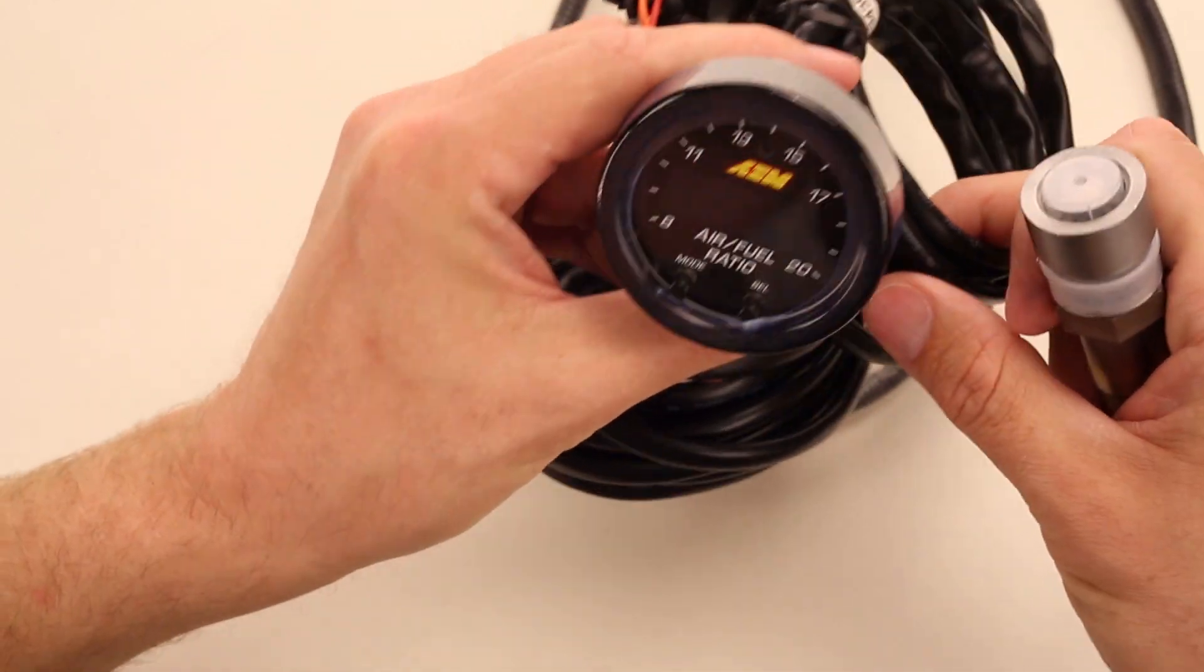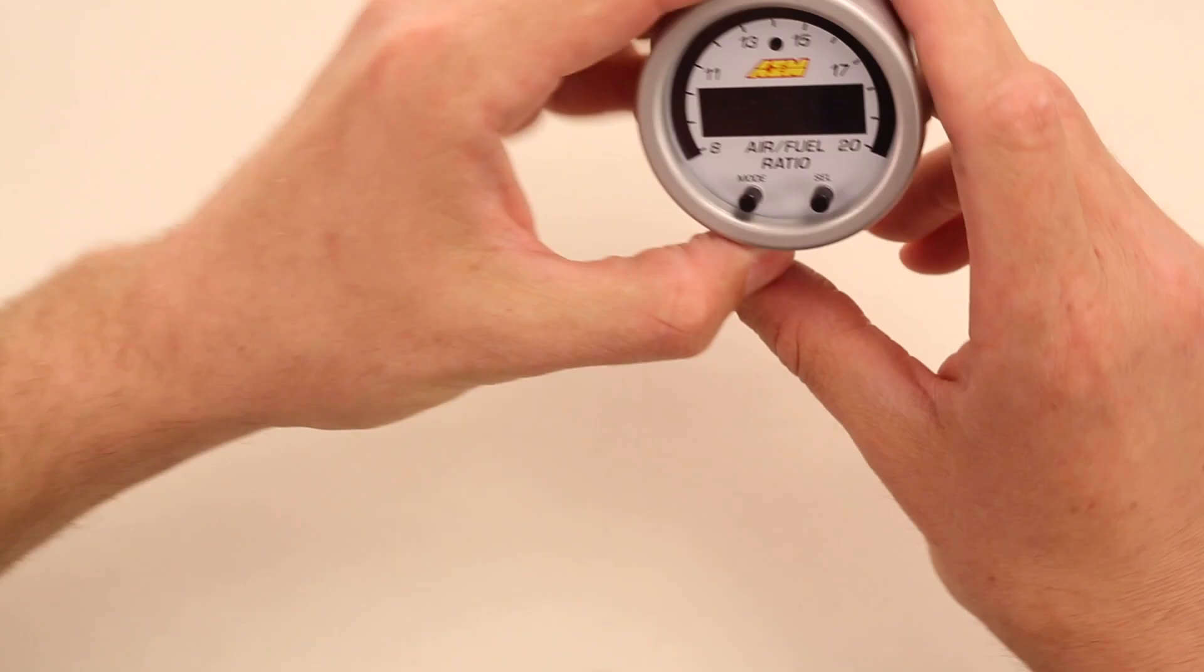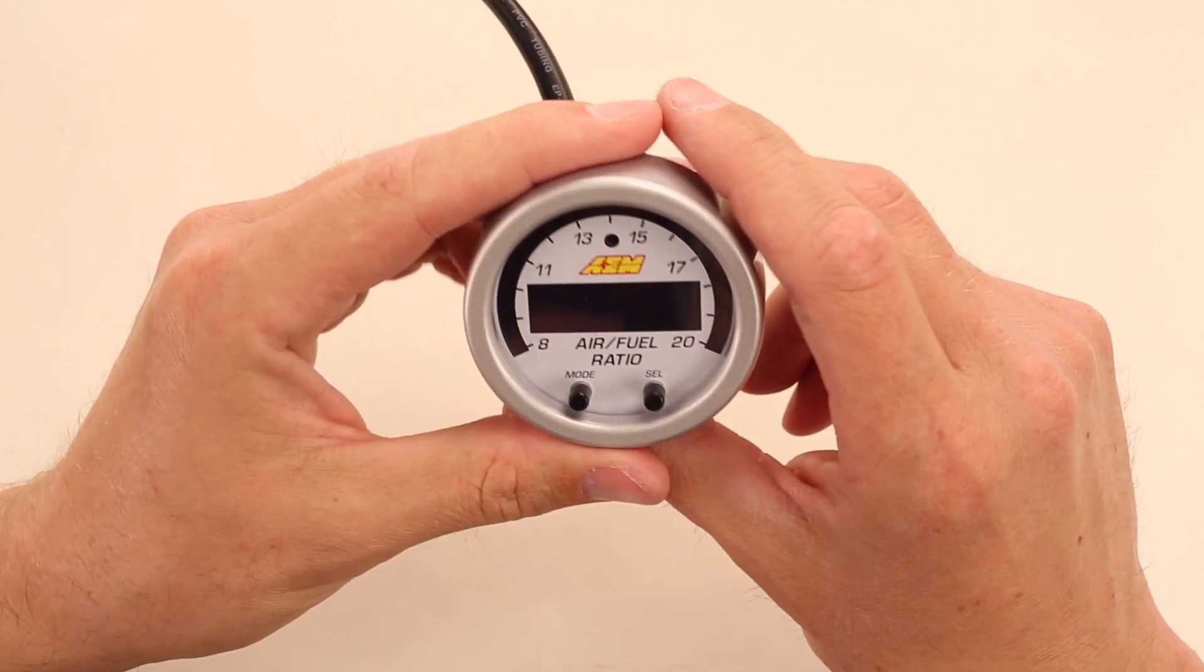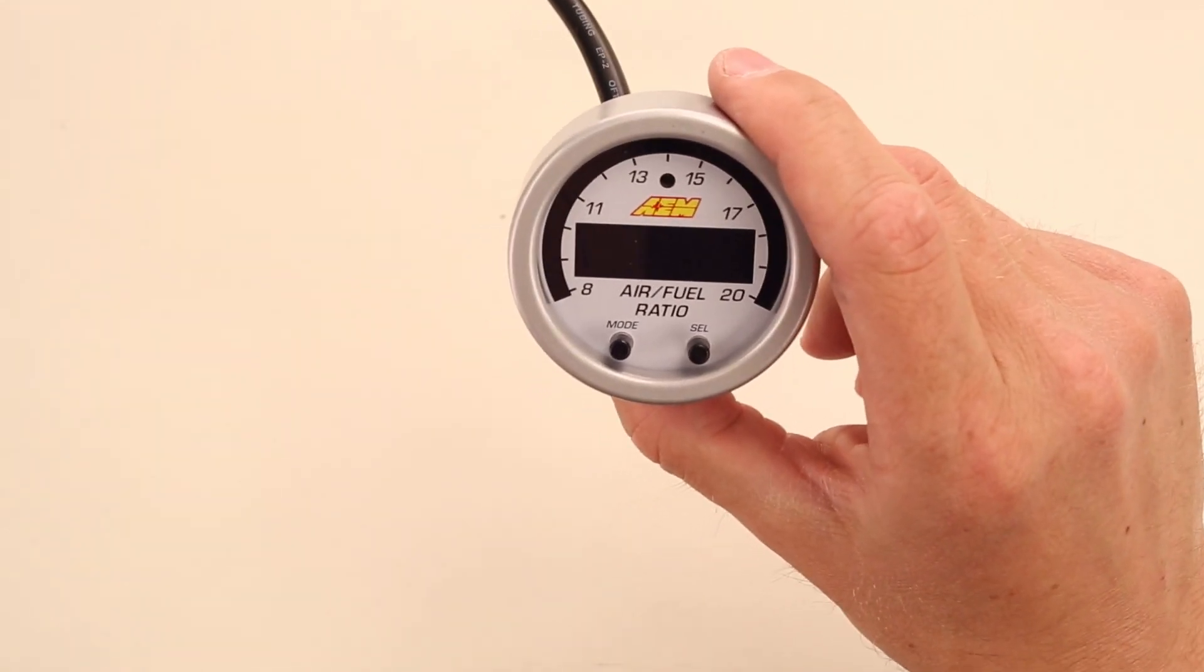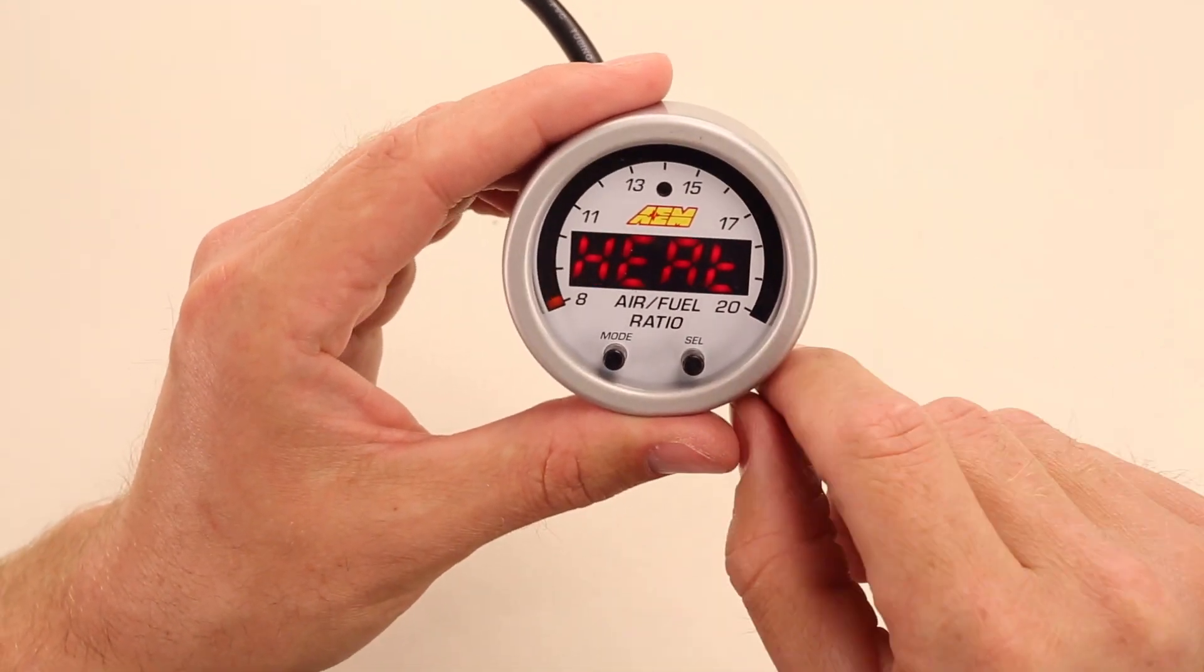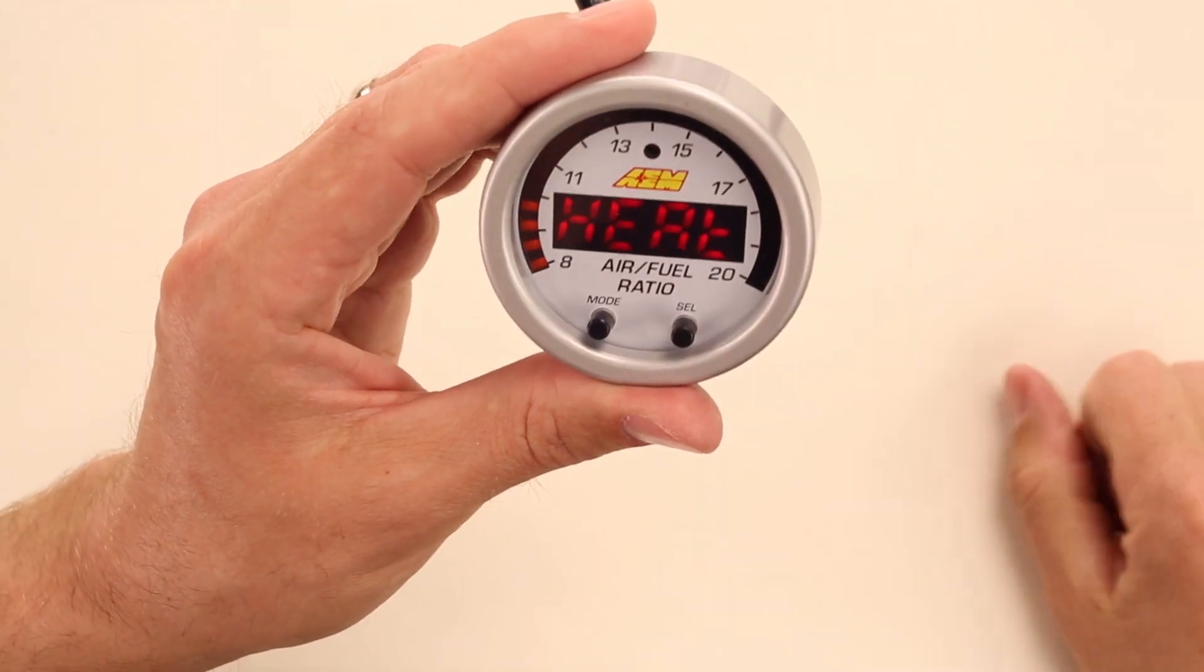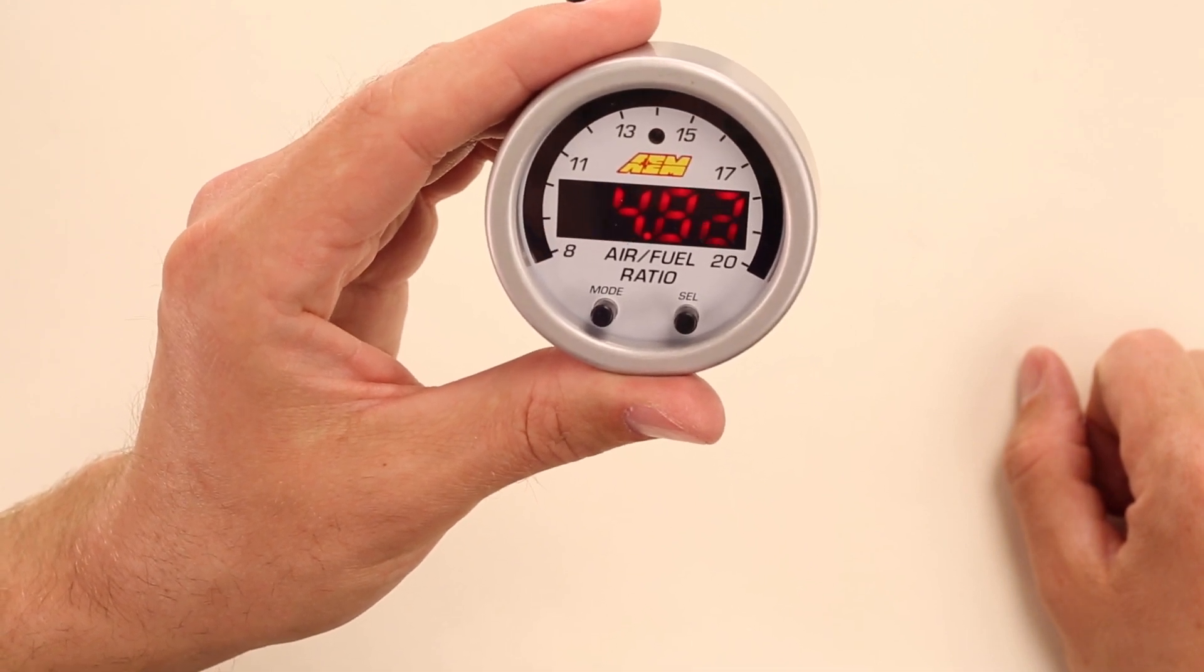Alright, now let's take a look at what the gauge looks like when it's powered up. And we can run it through its demo cycle. So, here we have AEM's optional silver bezel and white gauge face. When you turn the gauge on, it'll go through a system check. And you'll see that it will heat the O2 sensor so that it will be able to read actively when the engine starts up. So, you're seeing it priming and basically preheating the O2 sensor.